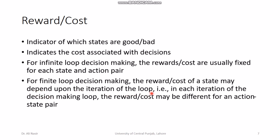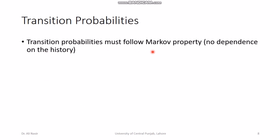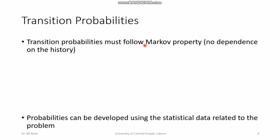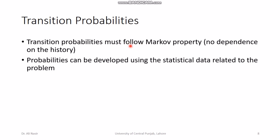For finite horizon decision making, the reward or cost of a state may depend upon the iteration of the loop — in each iteration the reward or cost may be different for the same action-state pair. The transition probabilities must follow the Markov property: the transition to the next state depends upon the current state only and not upon the history of states.